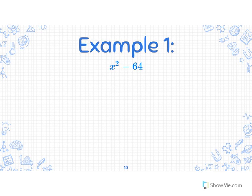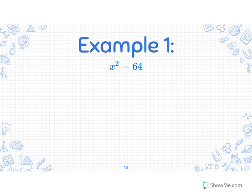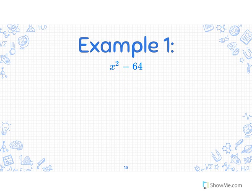Step three: identify if each of the terms are actually perfect squares. I do have an exponent that's even, and I do have a number that is a perfect square — 8 times 8 is 64. We also have to make sure we have two terms — check. And we have a negative sign in between — it will not work if this is a positive. We do have a negative sign, so we are able to proceed.